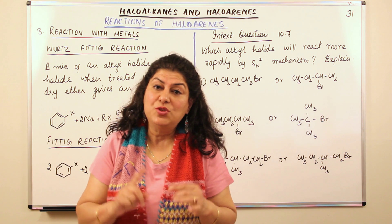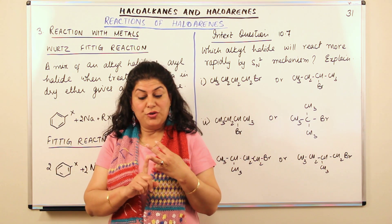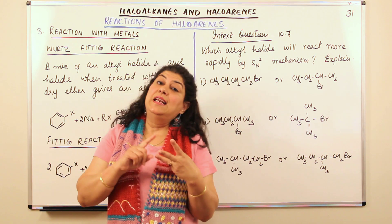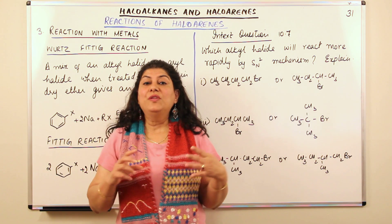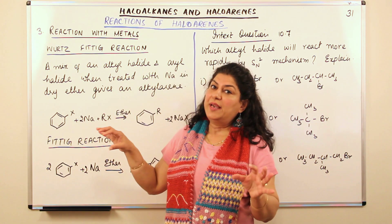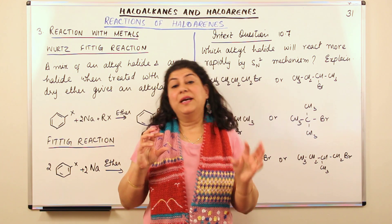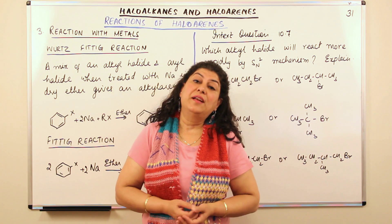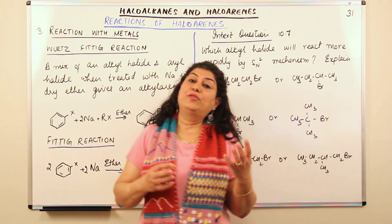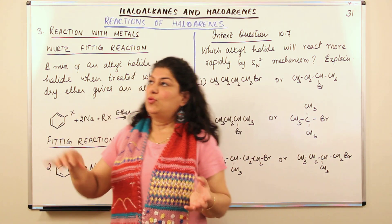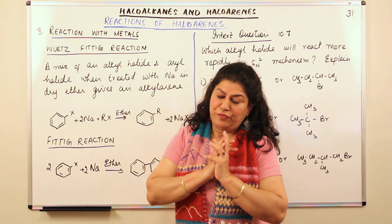In haloalkanes we did three kinds of reactions. The first was nucleophilic substitution reaction, the second was elimination reaction, and the third was reaction with metals. In reaction with metals, in the presence of dry ether, we react the haloalkanes with magnesium to get Grignard reagents. We also talked of the Wurtz reaction in which haloalkanes react with sodium in the presence of dry ether to give a dimer.